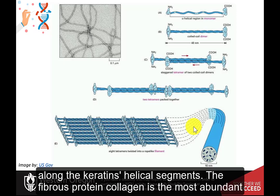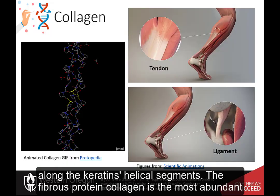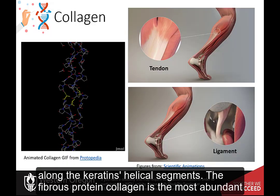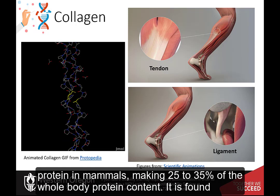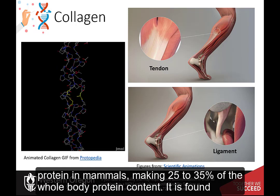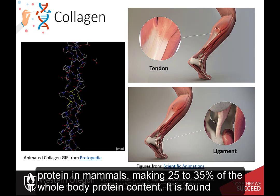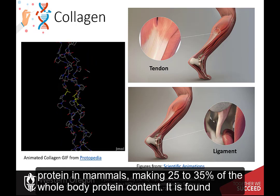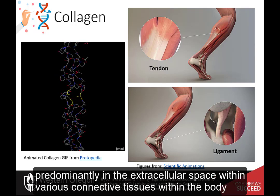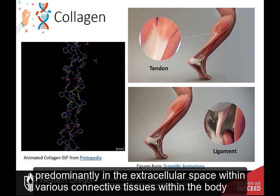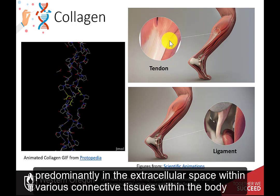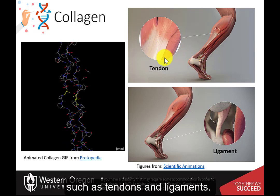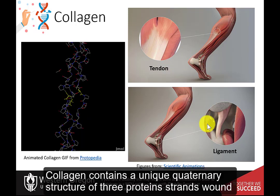The fibrous protein collagen is the most abundant protein in mammals, making 25–35% of the whole-body protein content. It is found predominantly in the extracellular space within various connective tissues within the body, such as tendons and ligaments.